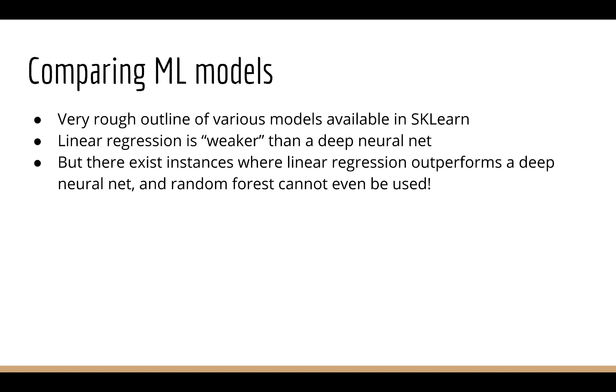Next, we discussed some categories of supervised machine learning models and looked at their relative pros and cons. Now this was just a very rough outline and I hope you treat it as such. Generally, yes, linear regression is a weaker model than a deep neural network or a random forest. But there are certainly instances where linear regression outperforms deep neural networks and random forests can't be used at all. So a simple linear model is always a good first thing to try.